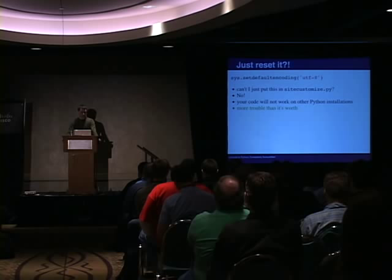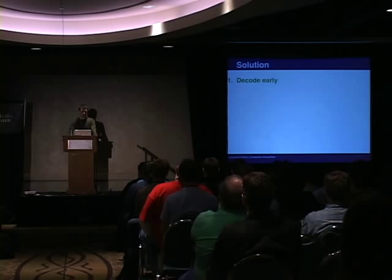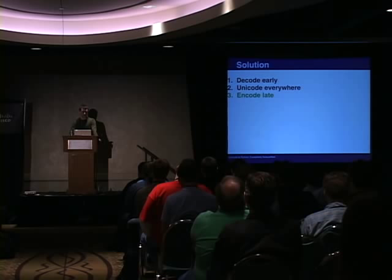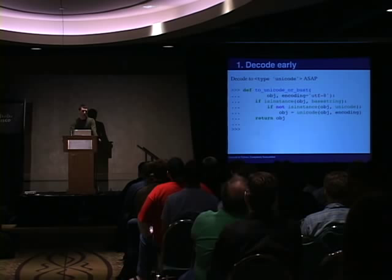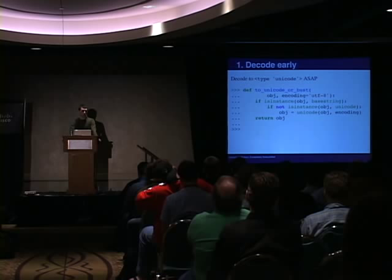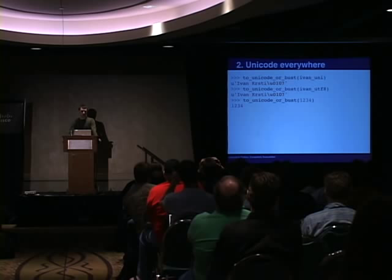Instead, the solution is pretty simple. You start by decoding early, using unicode everywhere, and encoding late. By decoding early, I just mean you decode to the unicode object — take your str type and turn it into unicode as soon as you see it. Here's a function you might use: it takes any object in, checks if it's an instance of basestring, and if it's not an instance of unicode, creates a unicode object and returns it. You can put this at the top of all your files that start to work with text. A unicode object in gives a unicode object back; a str object in gives unicode back; an integer or anything else is returned as-is.